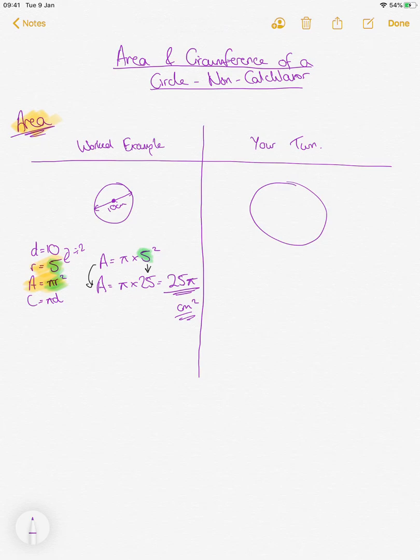I can just leave my answer as 25 pi centimetre squared. Should all be on the same line really, but I ran out of space. That's the same as if it was calculator. I could type 25 pi into my calculator and I'd get 78.3 blah blah blah, which makes sense because pi is roughly 3.1. Leaving your answer in terms of pi, you would just leave your final answer as 25 pi. Chance for you to have a go at one now.